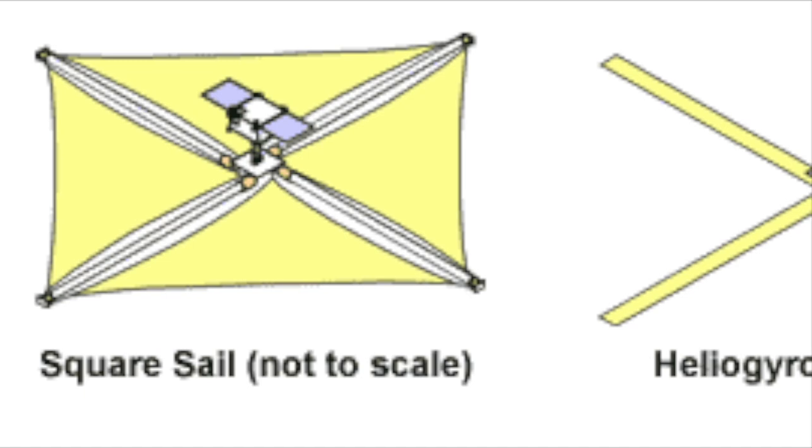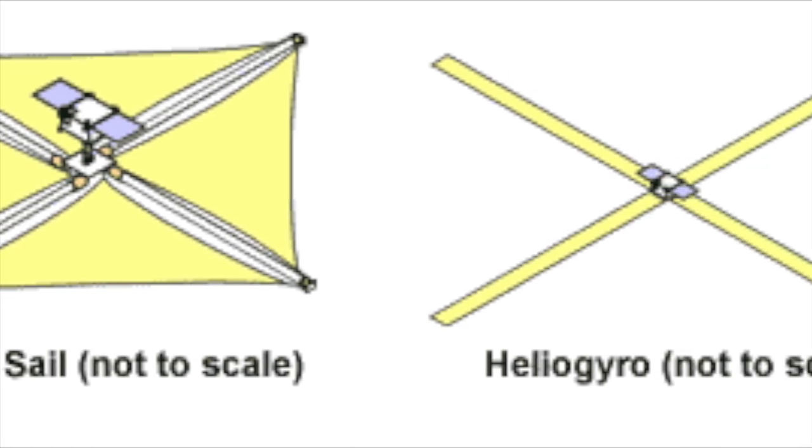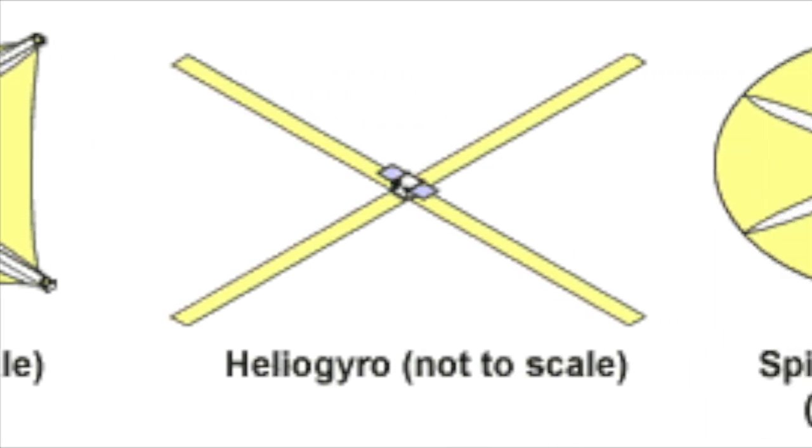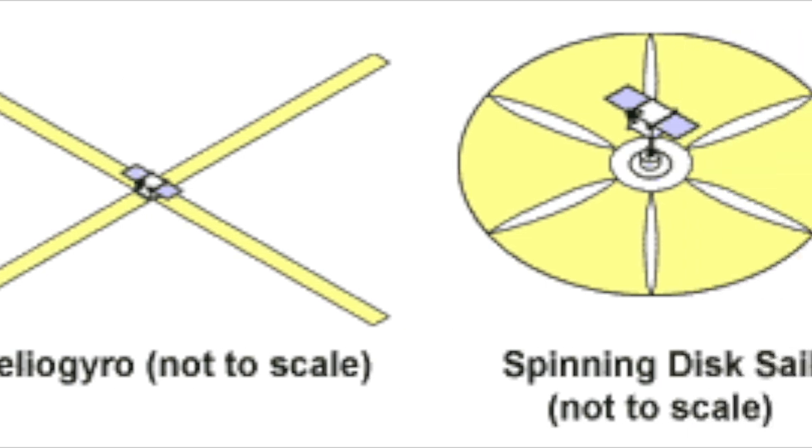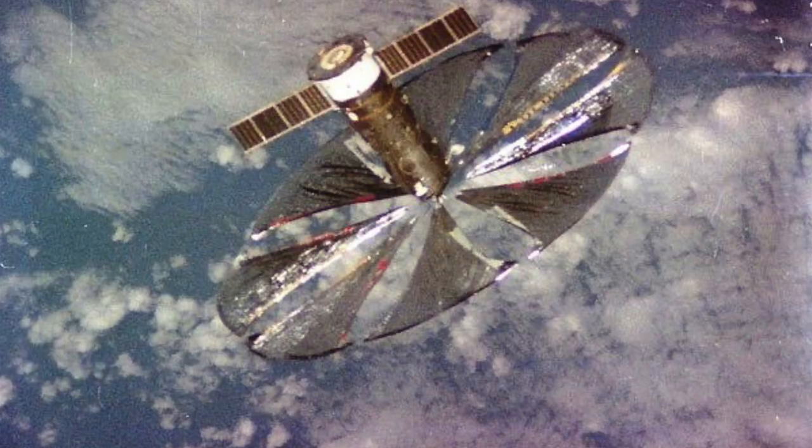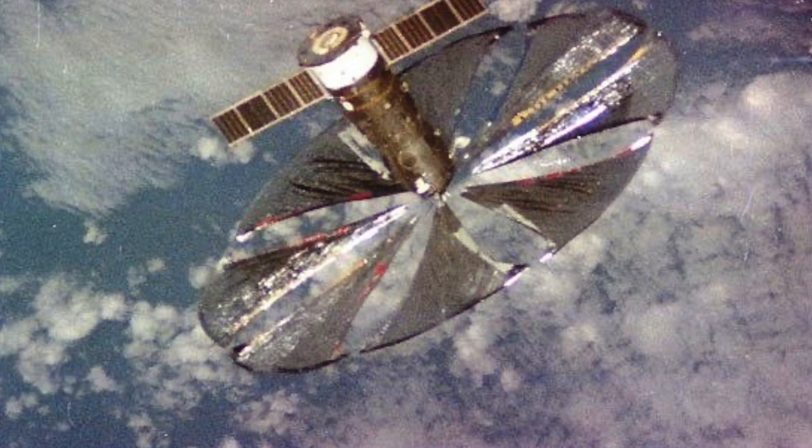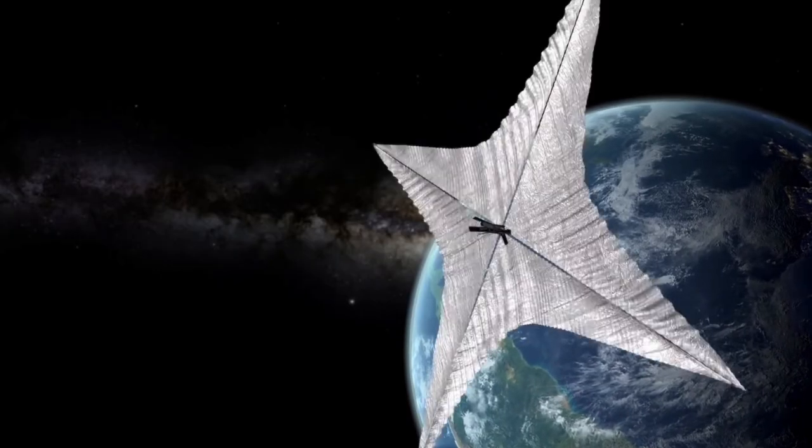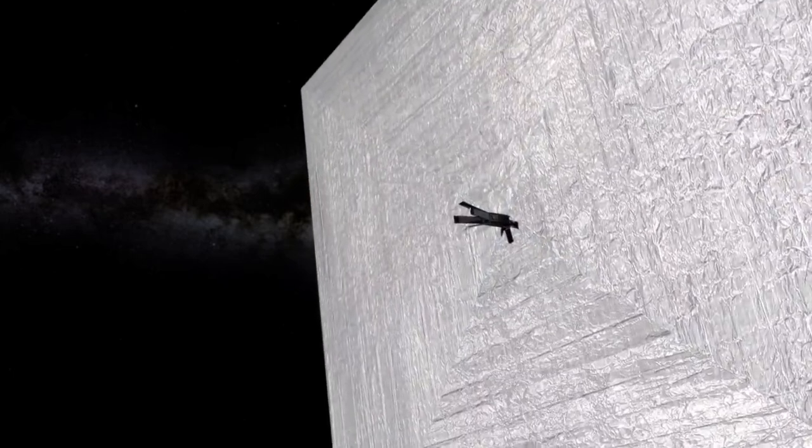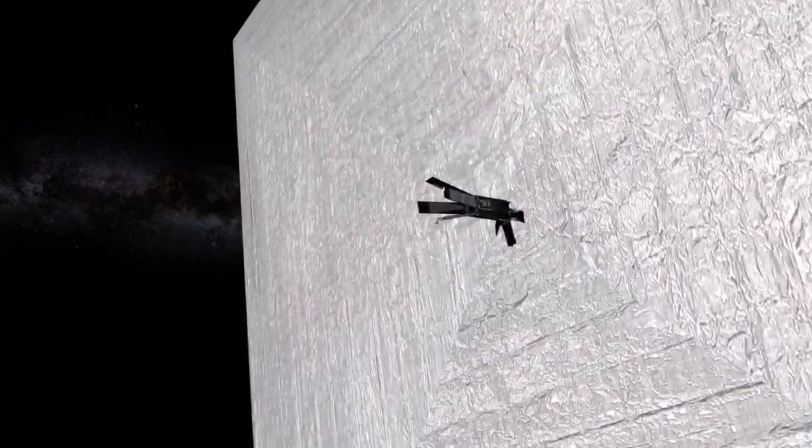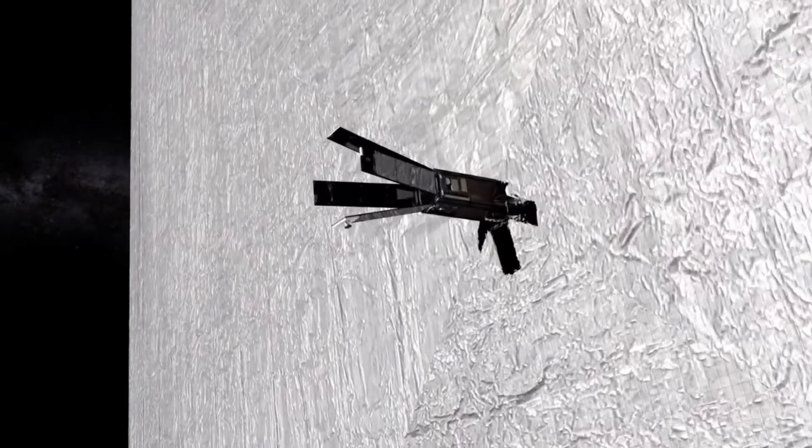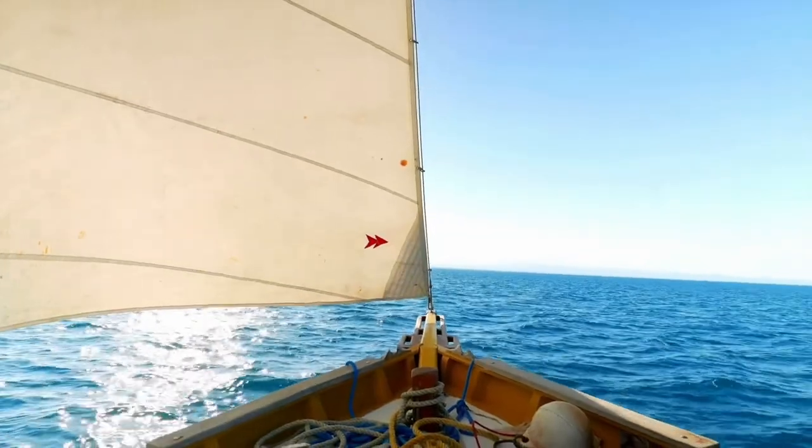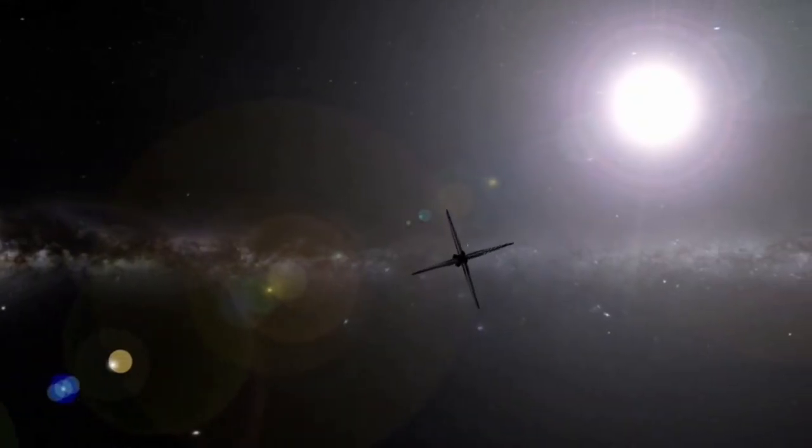Solar sails offer various propulsion mechanisms, each with distinct principles and advantages. Reflective solar sails are a prominent choice, utilizing the force generated by the momentum of photons. The sail's highly reflective surface, akin to a mirror, leads to light reflecting off it, imparting a force. In 2018, a novel approach emerged with diffraction-based solar sails, introducing unique propulsion mechanisms and claimed advantages.